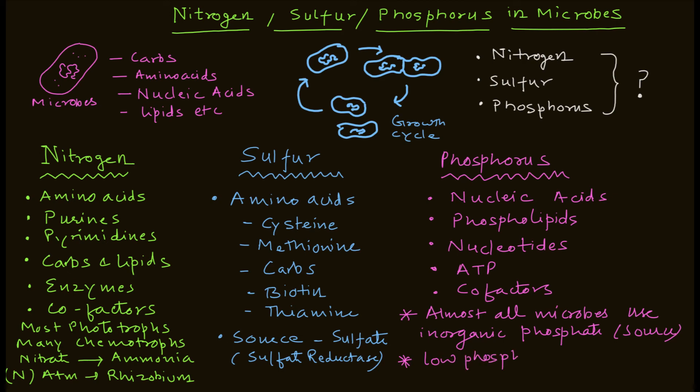If you have low phosphate or low phosphorus in your media, bacterial growth will get affected significantly. And one of the interesting examples of E. coli is it can use organic as well as inorganic phosphate as its source for phosphorus.